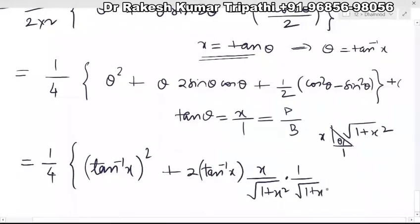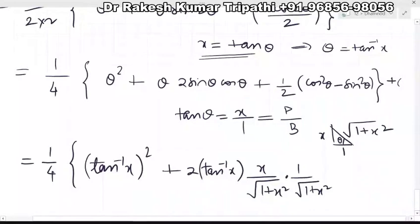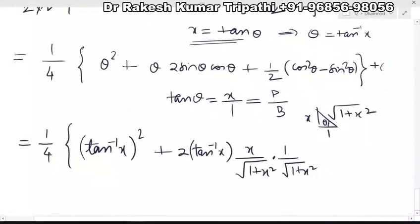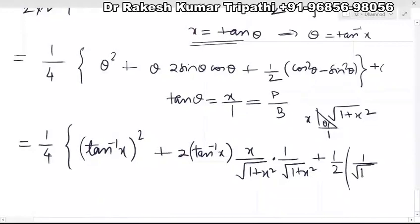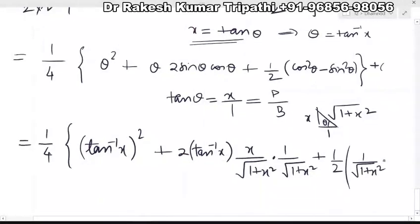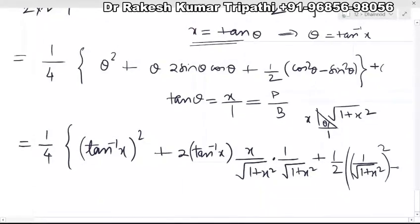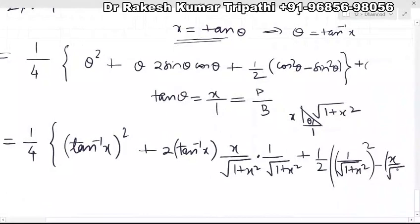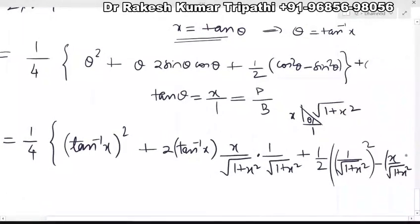If you know sin 2θ = 2 tan θ/(1 + tan²θ) that can save time, but if not, no problem — use the triangle method. For the 1/2 cos²θ term: cos θ is 1/√(1 + x²), so cos²θ is 1/(1 + x²). And sin²θ is x²/(1 + x²). So cos 2θ becomes (1 − x²)/(1 + x²). Plus integral constant C.